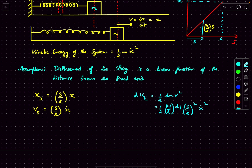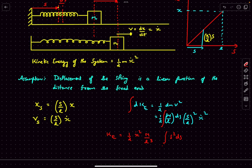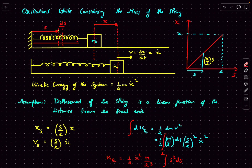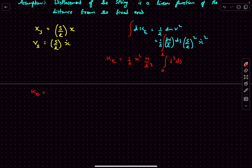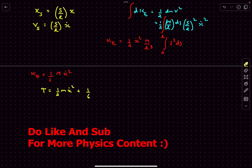We now integrate this elementary kinetic energy expression. The term ẋ² is independent of s so we take it out of the integral. The limits of s run from 0 to L, the natural length of the spring. After integration this comes out to (1/6)Mẋ². So the total kinetic energy T is ½mẋ² plus (1/6)Mẋ².